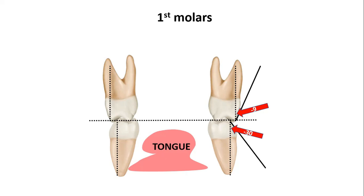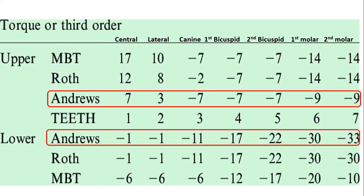That is what Andrews has mentioned that just upper four incisors have positive torque. Rest of the teeth have negative torque values.